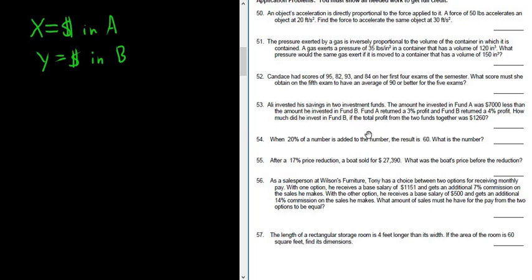The amount he invested in A was $7,000 less than the amount invested in B. So the amount invested in A is X, and it's $7,000 less than the amount in B. So that's Y minus $7,000. Let's check that. The amount invested in A is $7,000 less than B. So Y minus $7,000.